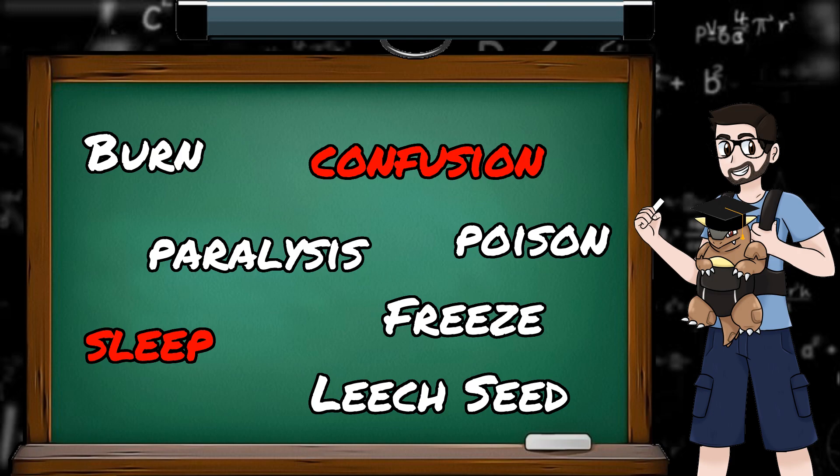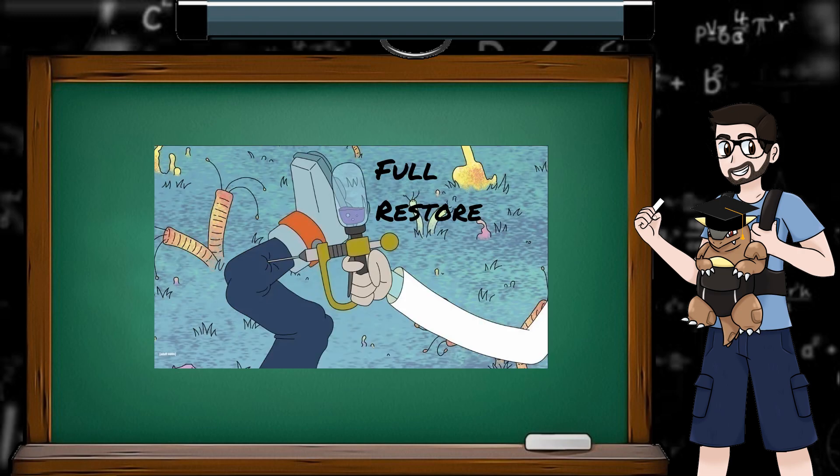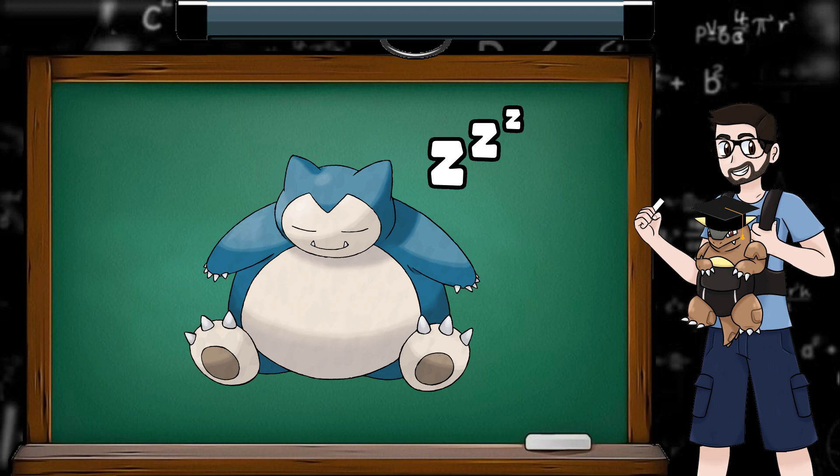Confusion and Sleep are the two status conditions that the user will eventually snap out of without any trainer involvement. For example, a paralysed Pokemon will be paralysed forever, missing 25% of their turns for 100 years, or until the trainer decides to use a full heal, full restore, paralysed heal, or takes them to a Pokemon center. A sleeping Pokemon however will wake itself up after a certain number of turns, needing no action from the trainer, and the same with Confusion. Obviously the trainer can use an item to speed up the process rather than waiting, but who uses items anymore honestly? This is the age of itemless Pokemon challenge runs.